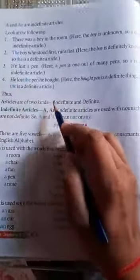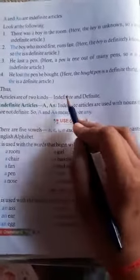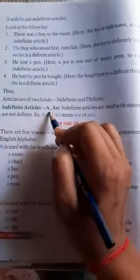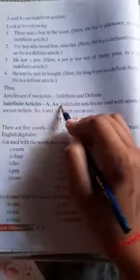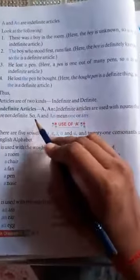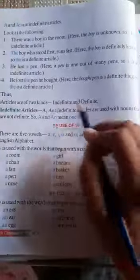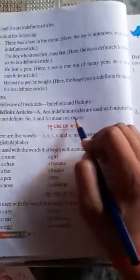Articles are of two kinds: indefinite and definite. Articles दो type के होते हैं — indefinite और definite. Indefinite articles कौन से होते हैं? a और an. Indefinite articles are used with nouns that are not definite. A and an mean 'one or any.'